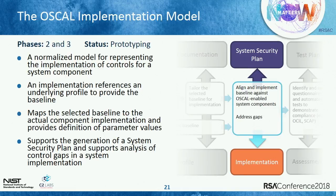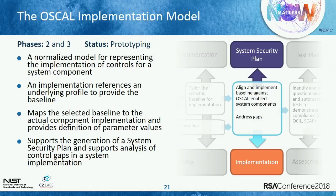The next area we're starting to work on is the implementation model — how you define your controls implementation for a system component. This would typically reference an underlying profile representing the baseline the system is implementing, mapping that selected baseline to the actual component implementation. We also want to deal with compensating controls and inherited controls from other systems at this layer. The end goal is to allow generation of a system security plan, as much of it as we can possibly generate automatically.